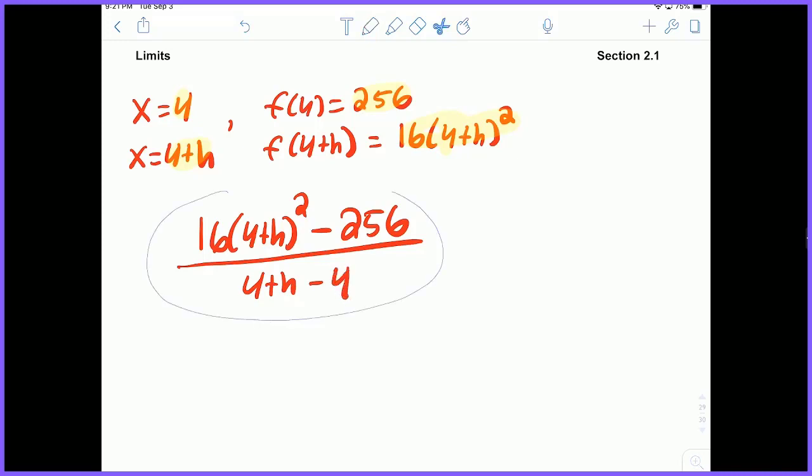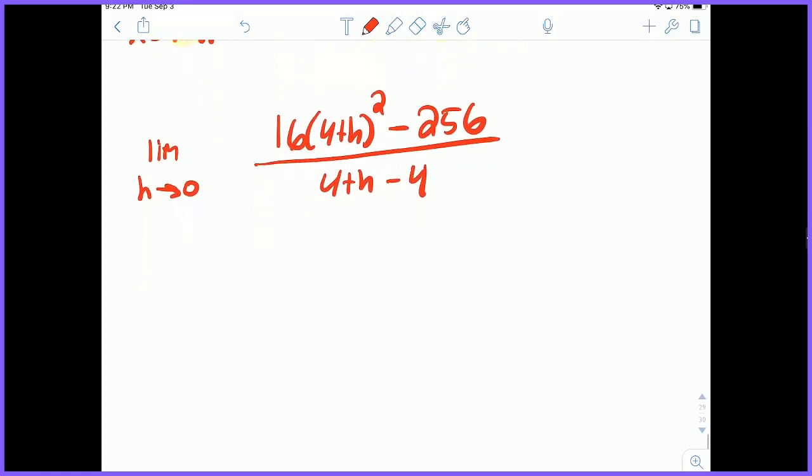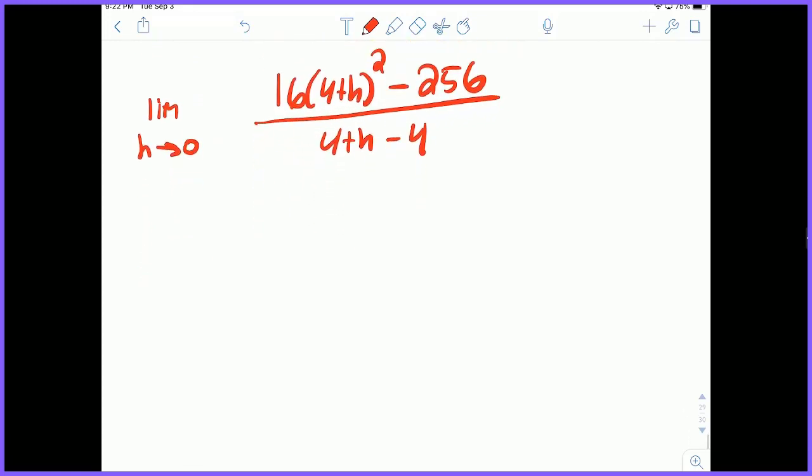And what I essentially want to do is I want to take this expression and I want to have the limit as h approaches 0. Because what we're doing is we're having that little bit away from 4 being as close to 0 as possible. And now I'm just going to simplify this and see if we can find the answer.